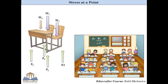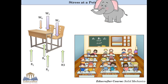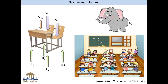Imagine you are in your classroom and suddenly an elephant enters and sits on one of the benches. What will happen? The bench will not be able to withstand the weight of the elephant and it will break. This is because the bench is designed for human beings and not for elephants. The bench would have retained its shape only if the stresses induced within it were within some permissible limit. This is the most important criterion to design any device, component or machine — that the induced stresses should not cross the permissible limit for safe performance.